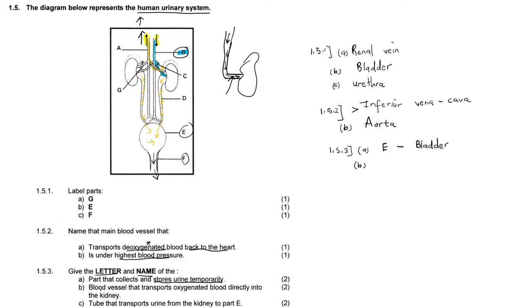Part B: give the letter and the name of the blood vessel that transports oxygenated blood directly into the kidney. What transports oxygenated blood directly into the kidney is the renal artery. Do not label the aorta, because the aorta is the one supplying the renal artery. What actually takes blood directly into the kidney is the renal artery. In this diagram, C is the renal artery — the tube supplying the kidney with oxygenated blood, which also carries waste products.